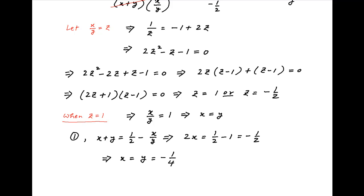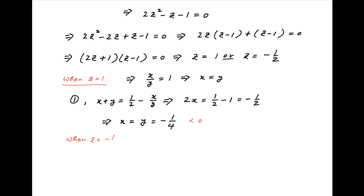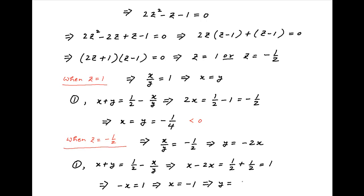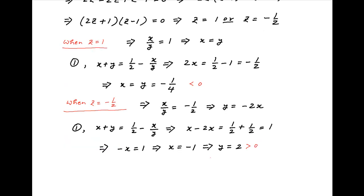Note that both x and y in this case are negative, as required in the problem statement. Now consider the second case when z is equal to minus half. Therefore, x upon y is equal to minus half, which implies that y is equal to minus 2x. Substituting this in equation 1, we get x minus 2x is equal to half plus half which is equal to 1. Therefore, minus x is equal to 1 or x is equal to minus 1, which implies that y is equal to plus 2, which is greater than 0. But we are given in the problem statement that both x and y are negative, and therefore this case is ruled out.